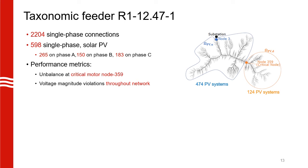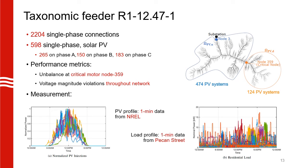Apart from voltage unbalance, we are also going to look at voltage magnitude violations to compare the performance of all the methods. For our case study, we use actual measurement data. On the left, we have six unique PV profiles with one-minute resolution from NREL. On the right, we use 30 unique residential load profiles with one-minute resolution, which we obtained from Pecan Street.